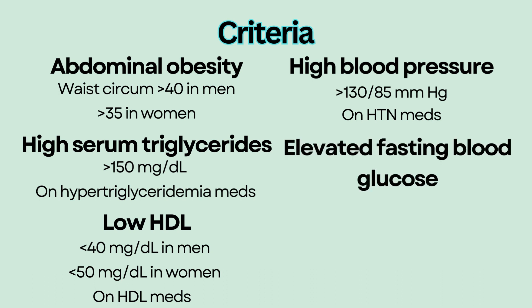Elevated fasting blood glucose is defined as more than 100 milligrams per deciliter, or those who are on hyperglycemia medications.